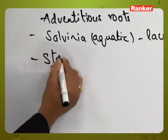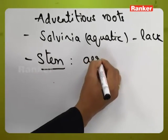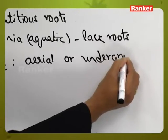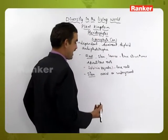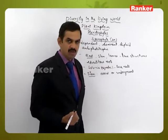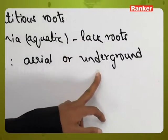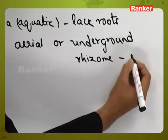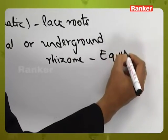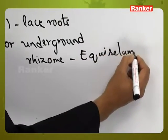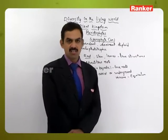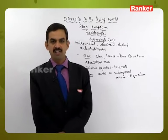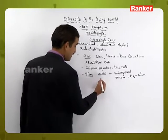Coming to the stem, it may be aerial in some plants or underground in others. Aerial means it is present above the surface of the soil, and underground means it is present inside the soil. A rhizomatous stem is present in Equisetum — this is an underground stem which is horizontally present inside the soil with a dorsiventral differentiation.